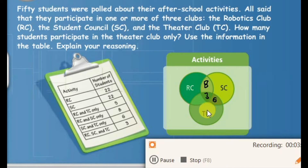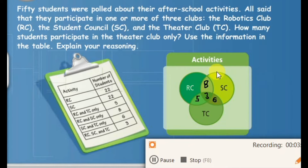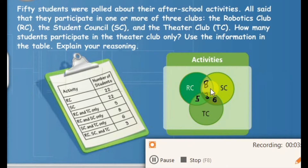The whole Student Council has 22 members. Considering we already have 8, 3, and 6 for the parts of the Student Council set, we count the remaining number for the whole circle to equal 22. So 8 plus 3 is 11, 11 plus 6 is 17. How many more do we need for 17 to become 22? We only need 5.